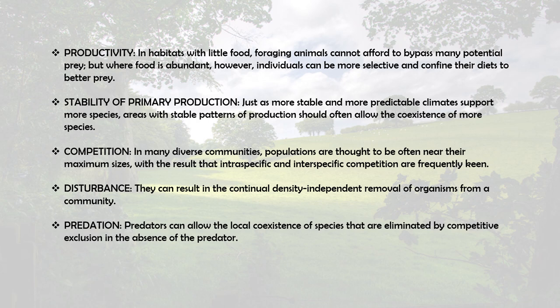The next factor is productivity. In habitats with little food, foraging animals cannot afford to bypass many potential prey. But when there is an abundance of food in the ecosystem, individuals can be more selective and choose better prey items. More productive habitats where food is dense offer more prey choice and hence allow greater specialization than less productive habitats.